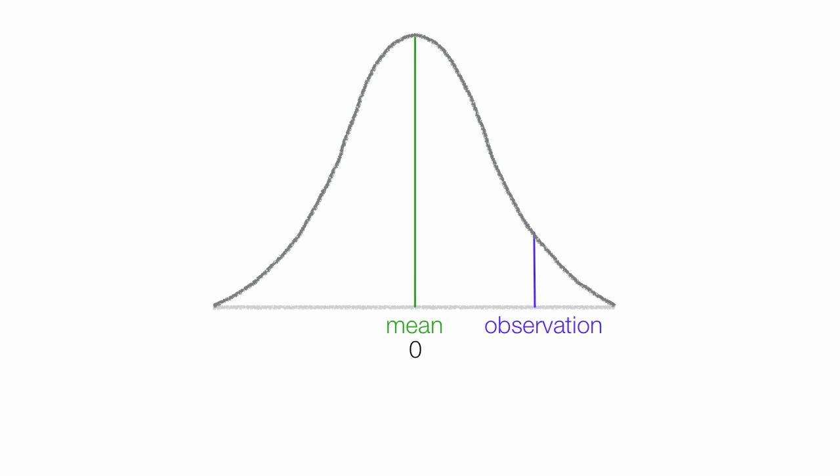Z-scores measure the distance between the mean and an observation. The distance is in standard deviations. On the right are positive Z-scores, and on the left negative Z-scores. Right at the mean, the Z-score is zero.